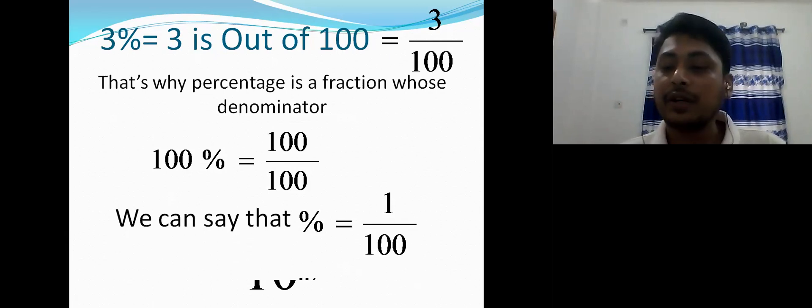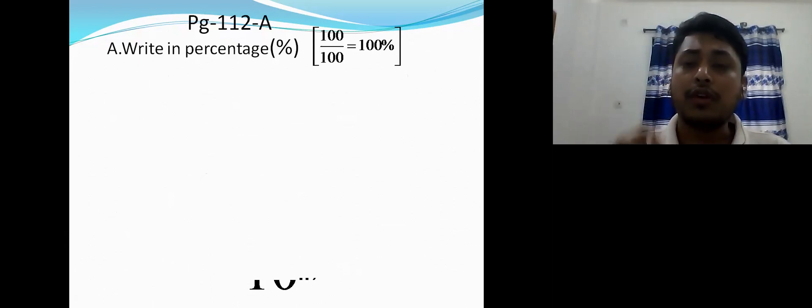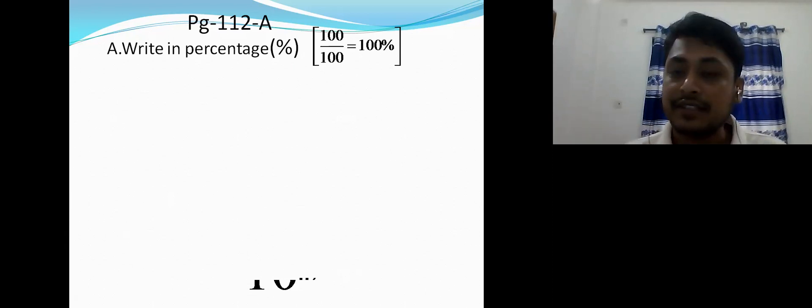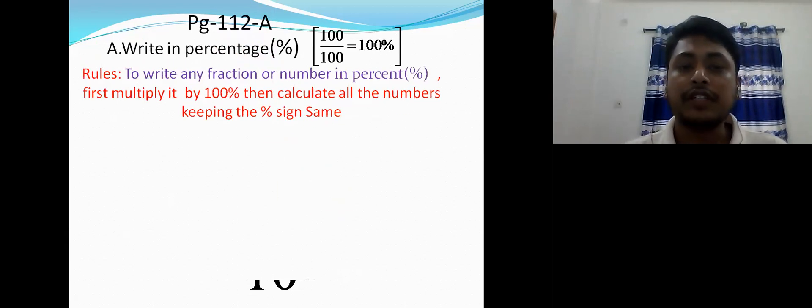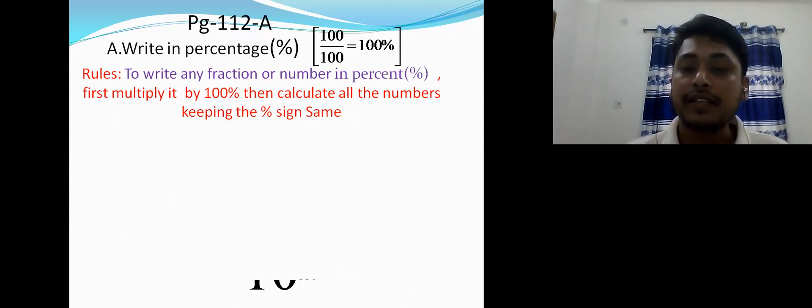Now page 112a — write in percentage. There are many ways, but I follow one unique way. Whatever the number given — mixed number, decimal, fraction, or whole number — you multiply by 100 percent. To write any fraction or number in percent, first multiply it by 100%, then calculate, keeping the percent sign the same.